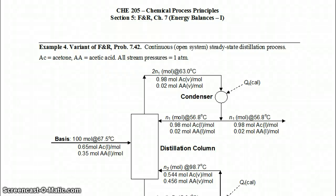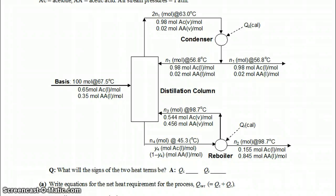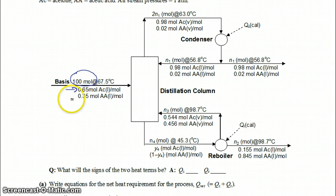Here we have an example problem which starts on page 5-12 in the course pack, where we're going to use energy balances integrated with a material balance problem in order to solve for the unknown variables. In this particular problem we have a distillation column with a feed coming to it. The feed consists of 100 moles, and 65% on a mole basis is acetone, and 35% on a mole basis is acetic acid.